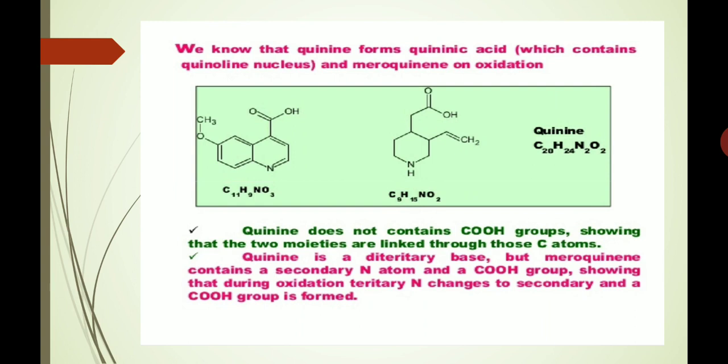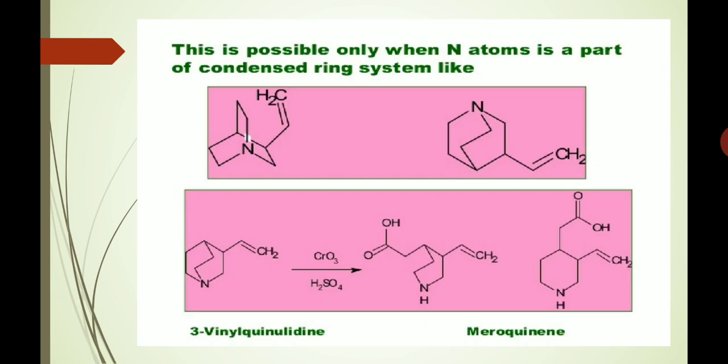We know that quinine forms quininic acid, which contains the quinoline nucleus, and meroquinine on oxidation. Quinine does not contain a carboxylic group, showing that the two moieties are linked through those carbon atoms. Quinine is a ditertiary base, but meroquinine contains a secondary nitrogen atom and a carboxylic group, showing that during oxidation the tertiary nitrogen atom changes to secondary and a carboxylic group is formed. This is possible only when the nitrogen atom is part of a condensed ring system. Here, this is 3-vinylquinuclidine, and upon oxidation with chromic acid it gives meroquinine.